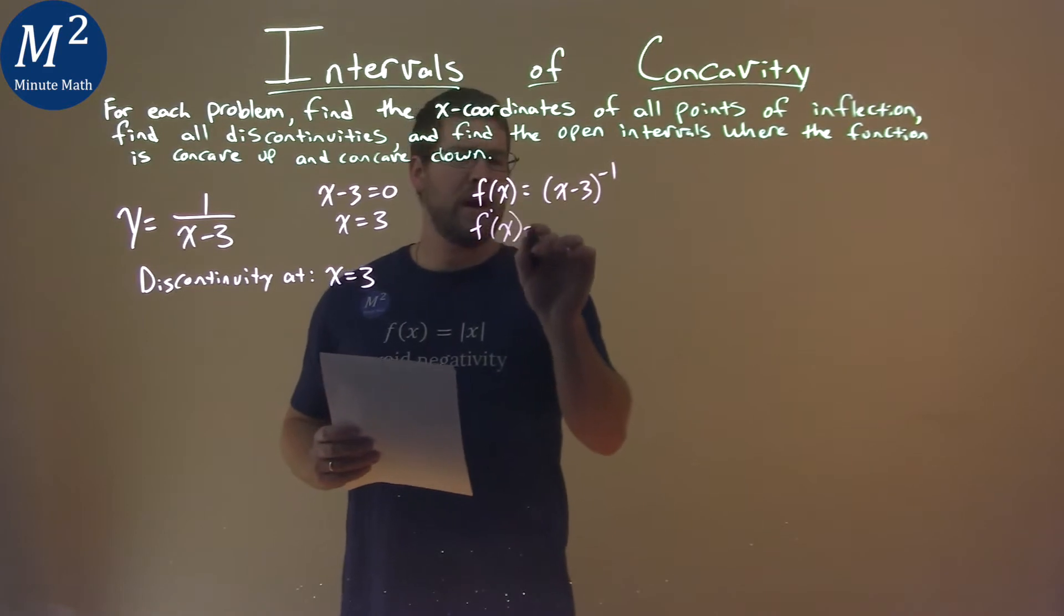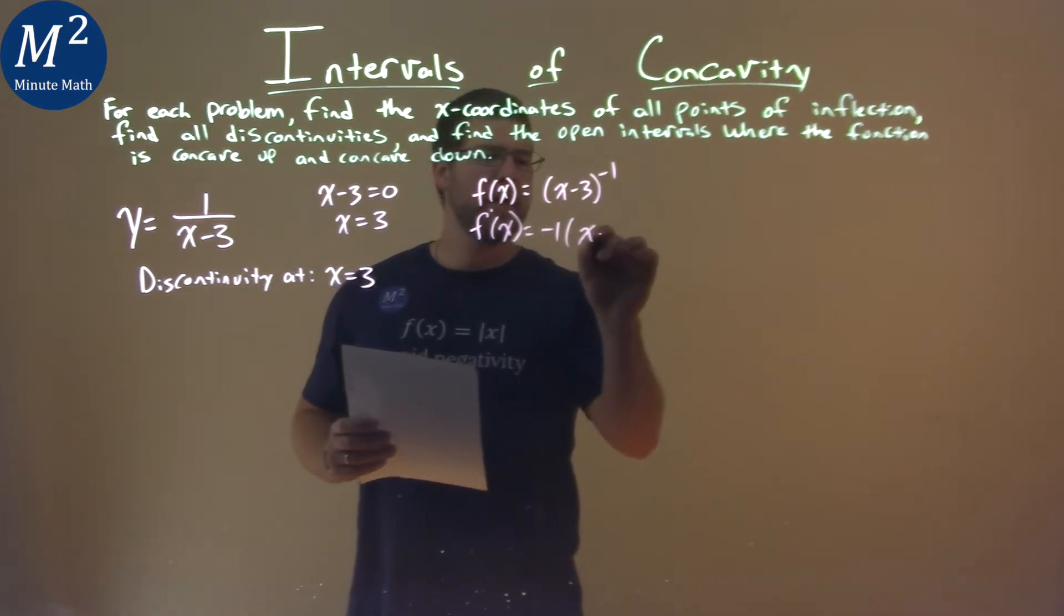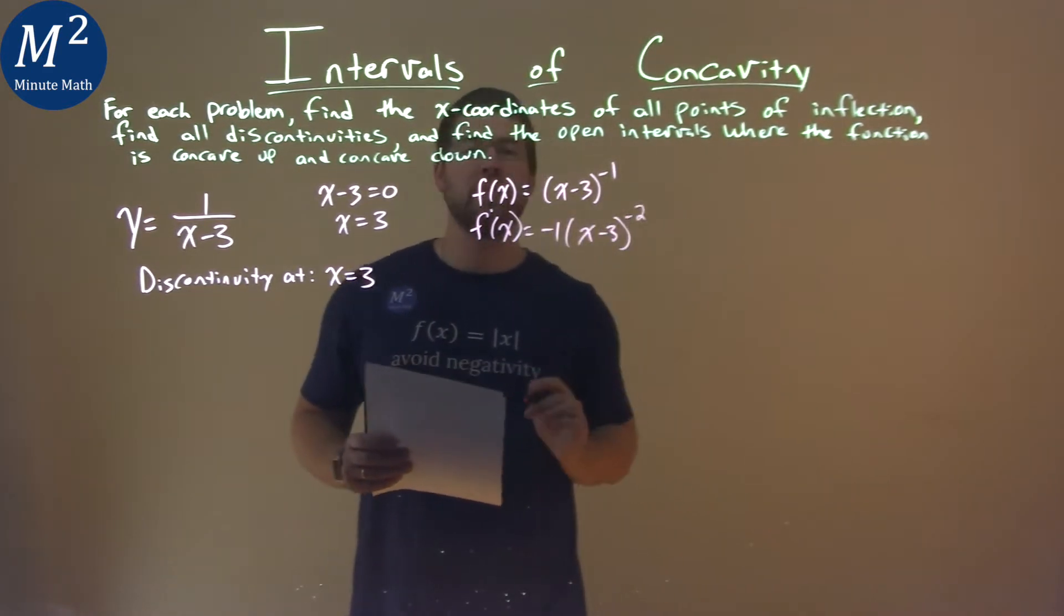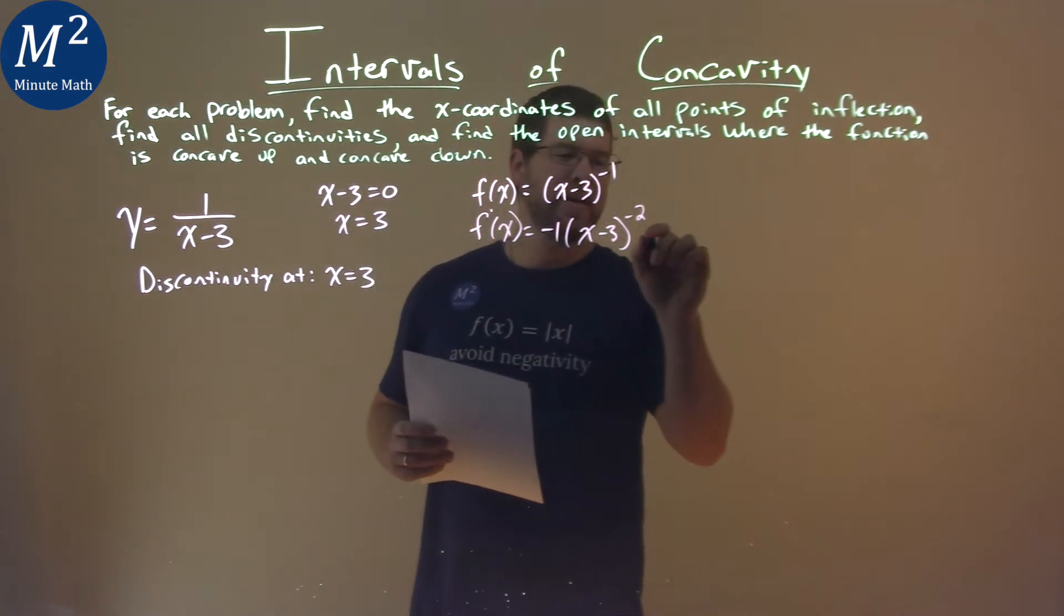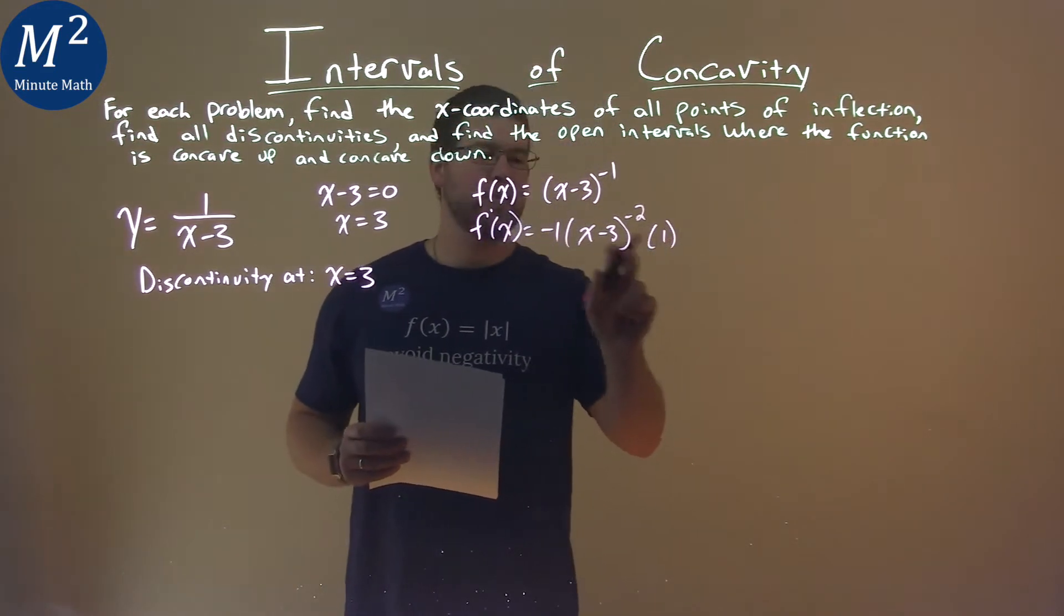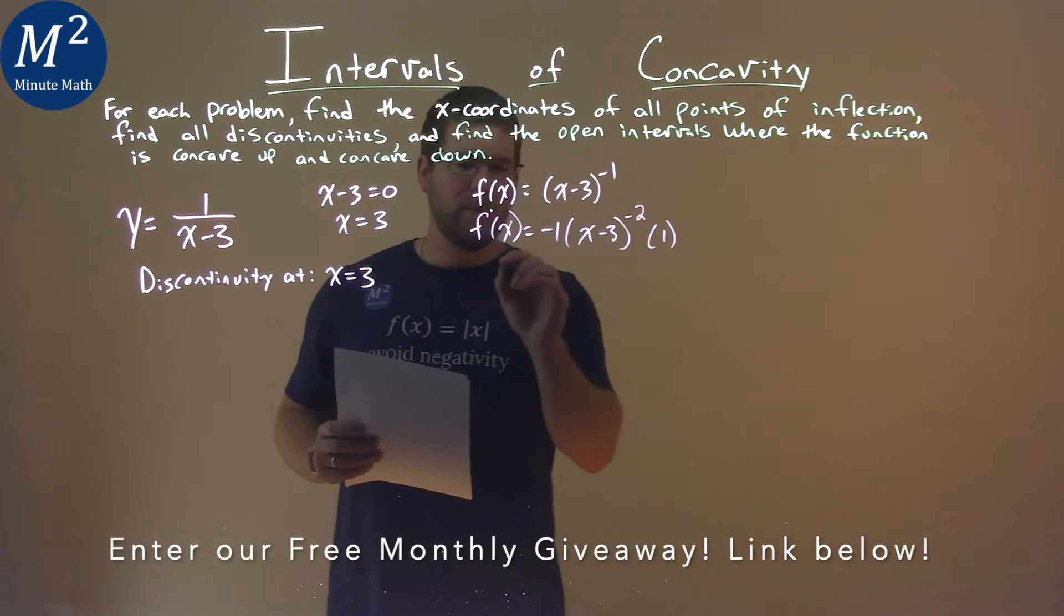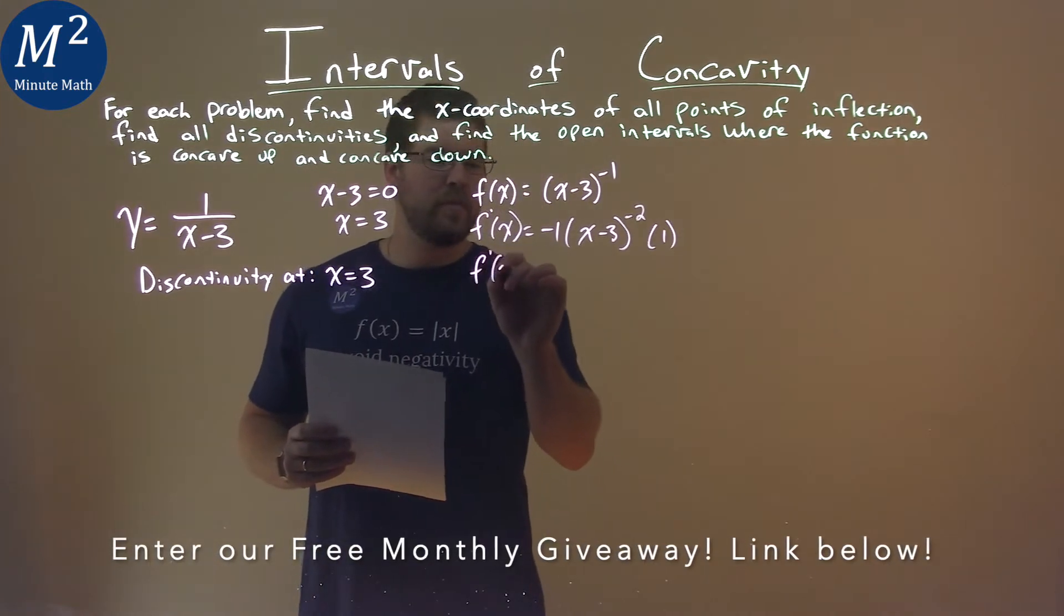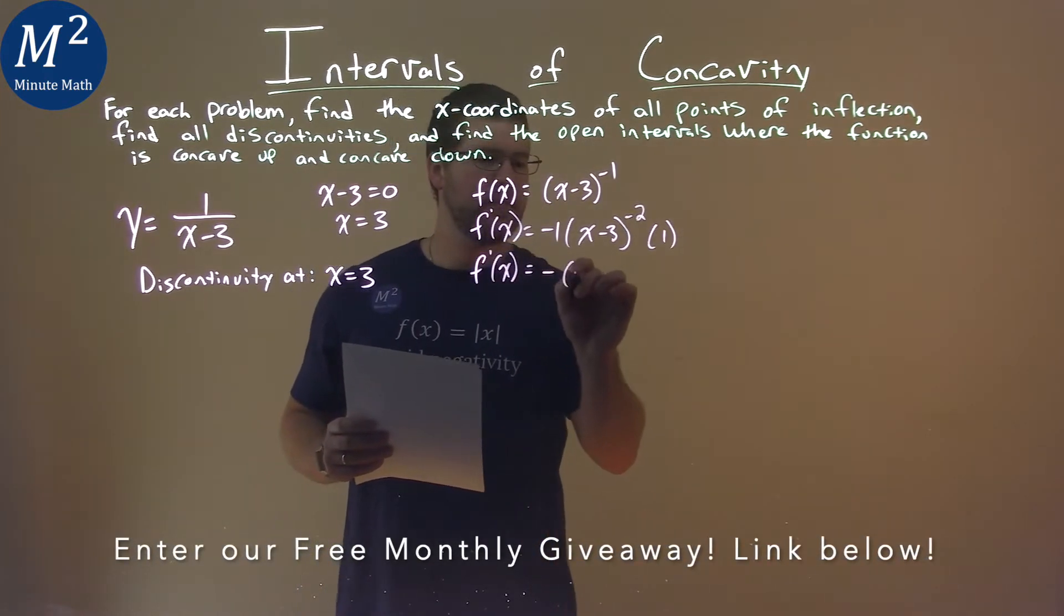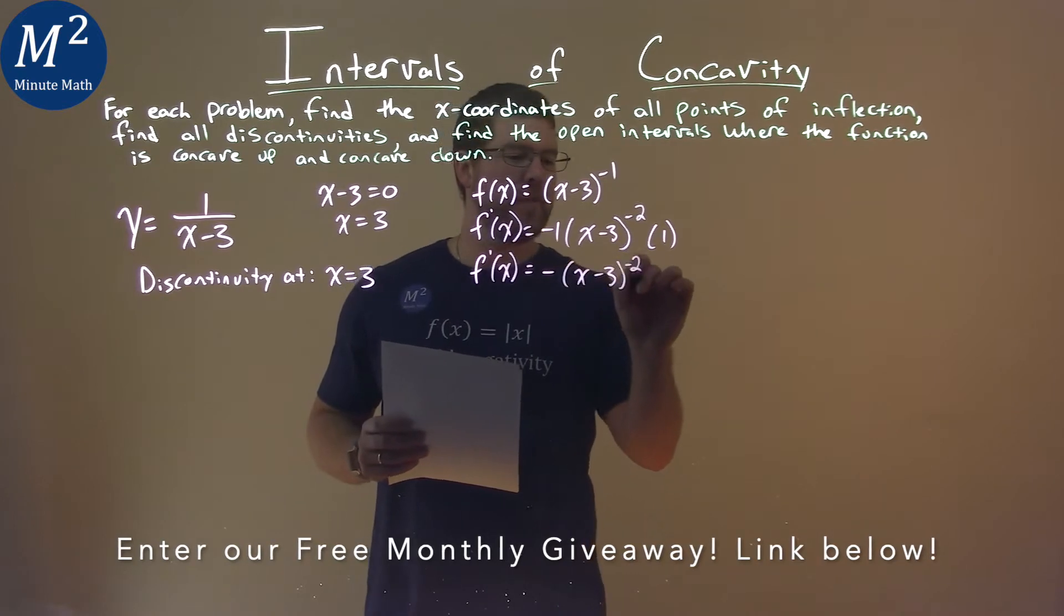f prime of x here, power rule. Negative 1 comes down, x minus 3 stays the same, negative 2 in the exponent, and multiply by 1 here, the derivative inside. We can simplify this: f prime of x equals negative x minus 3 to the negative 2 power.